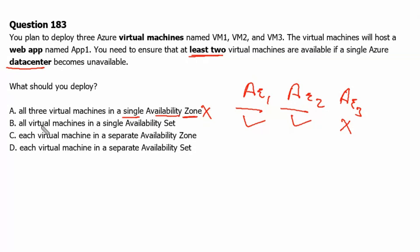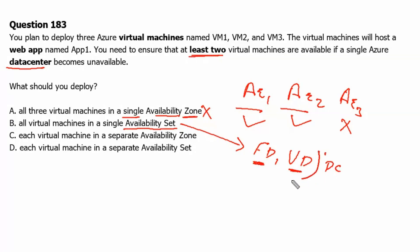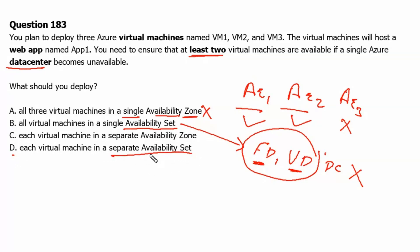Option B — all virtual machines in a single availability set — is also incorrect. An availability set is composed of fault domains and update domains, and all the fault domains and update domains reside in the same data center. Therefore, if the data center goes down, all virtual machines running in the fault domains and update domains will go down.